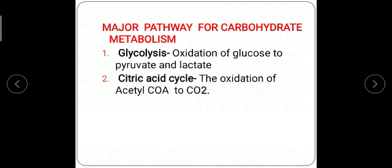The second one is citric acid cycle, also called Krebs cycle, in which acetyl coenzyme A is oxidized into carbon dioxide. Krebs cycle is the final common oxidative pathway for carbohydrates, fats, and amino acids through acetyl coenzyme A.